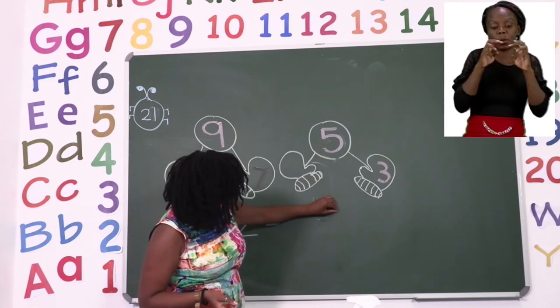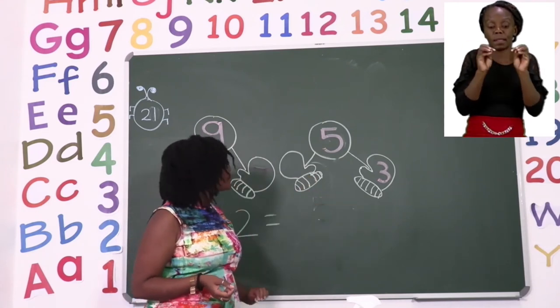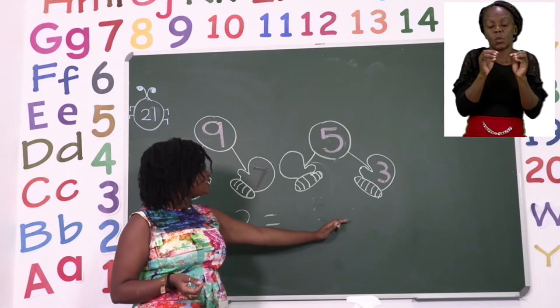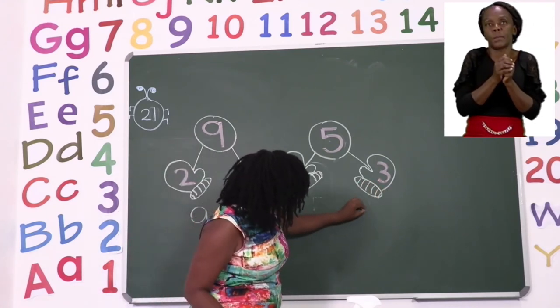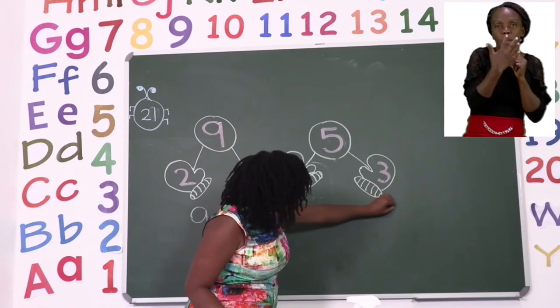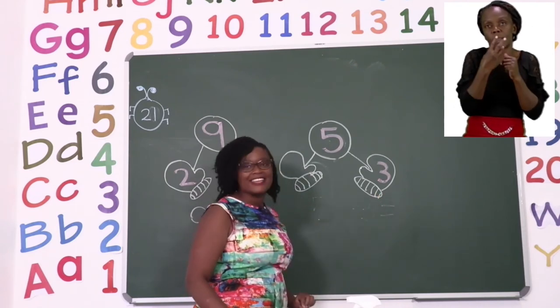And because we're looking for a missing number on the mitten, we need to subtract. So we say five minus, and then we take the number for the mitten we can see, which is three. So five minus three equals.